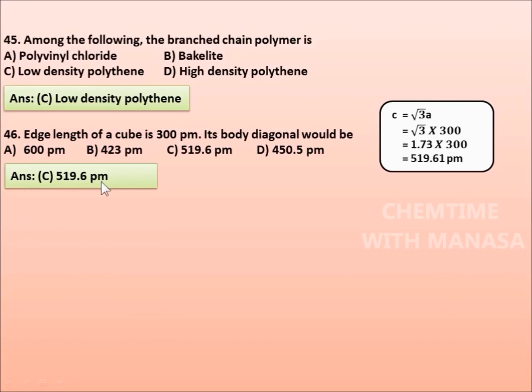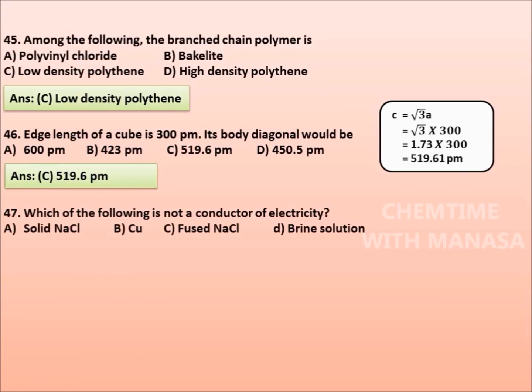Question 47: Which of the following is not a conductor of electricity? Solid NaCl, copper, fused NaCl, or brine solution. Correct answer is option A, solid NaCl.